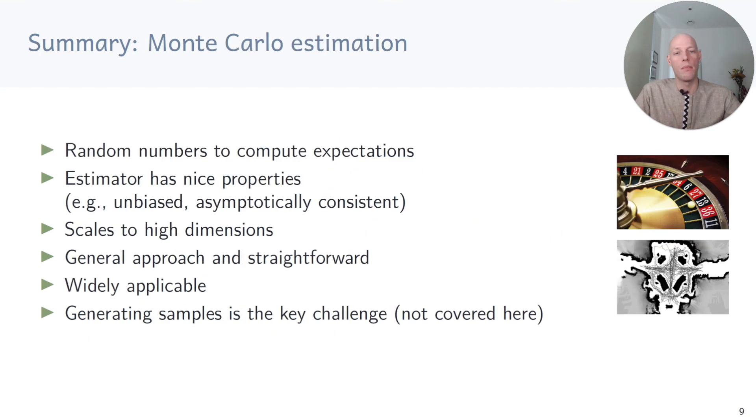To summarize, Monte Carlo estimation uses random numbers to compute expectations. The estimator has some nice properties and it scales to high dimensions. But the key difficulty is the question of how to generate samples. We didn't cover this here, but Ian Murray gave a great tutorial on this five years ago, which I can highly recommend.